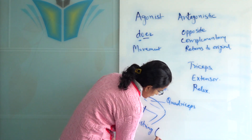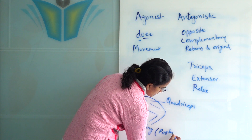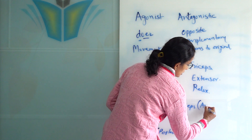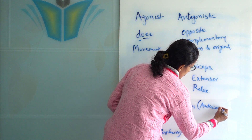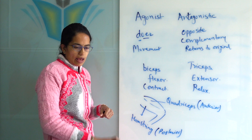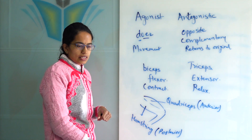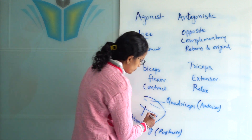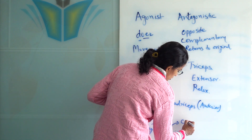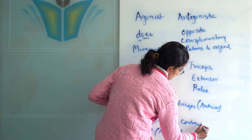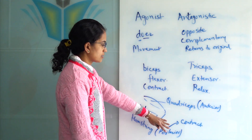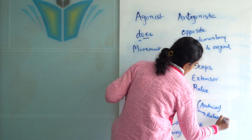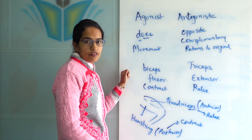The hamstring is on the lower side, so we can say it is the posterior muscle. However, the quadriceps is the anterior muscle. Now when you are running, the anterior muscle would actually relax and there would be contraction of the lower muscle. So the hamstring would contract, and once this contracts, the quadriceps would relax, and this would happen during hip flexion.